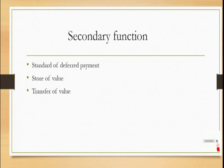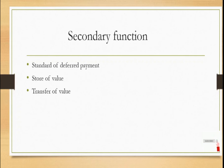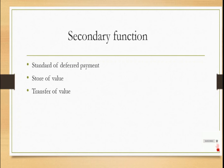The next point is transfer of value. Transfer of value indicates that any person who is holding the money has the power of that money residing with them. Suppose I have 5,000 rupees and I pay it to my brother, sister, or wife — now the power of that 5,000 rupees resides with the person I provided it to. If I purchase goods or services of 5,000 rupees and pay that amount to someone, monetary power transfers from my side to the seller's side.